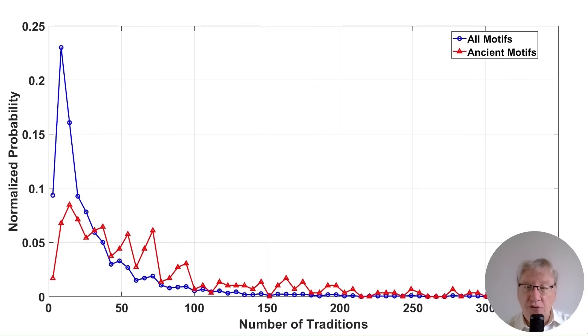The blue curve represents the distribution of all myth motifs in the database. The red curve is a distribution restricted to motifs known to have existed approximately 2000 years ago, including ancient sources from China, Egypt, Rome, and Sumer, all located in Eurasia and Africa as we lack old data from other continents. You can see that the two curves have different shapes.